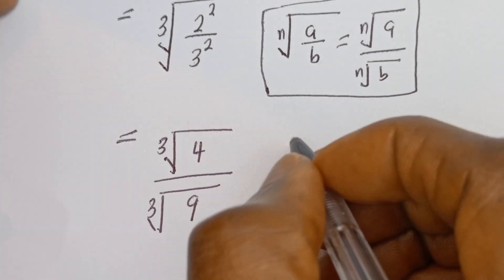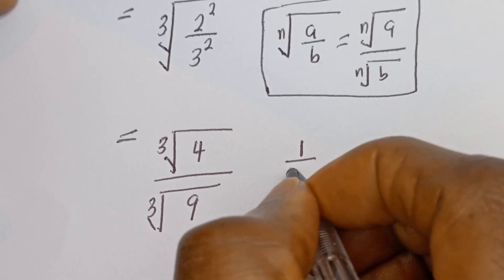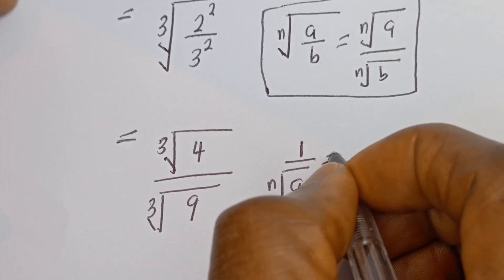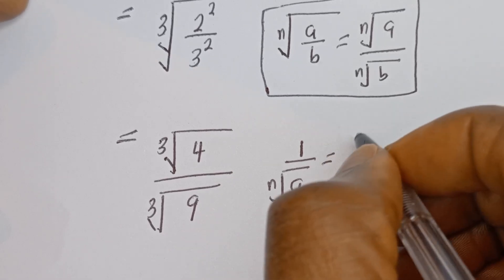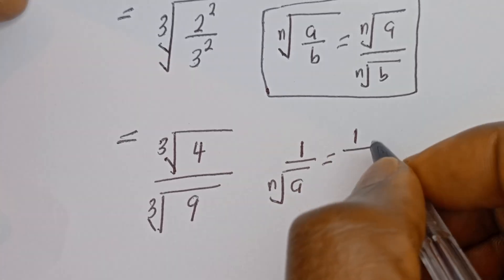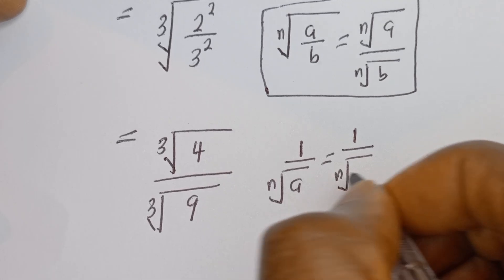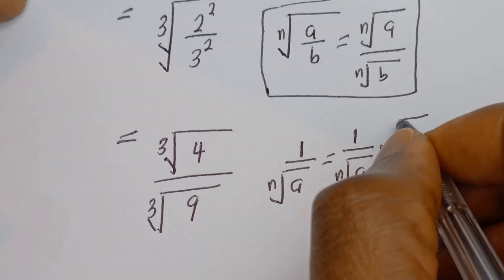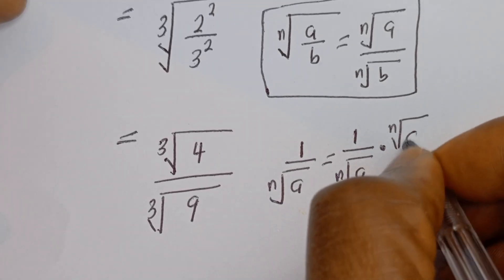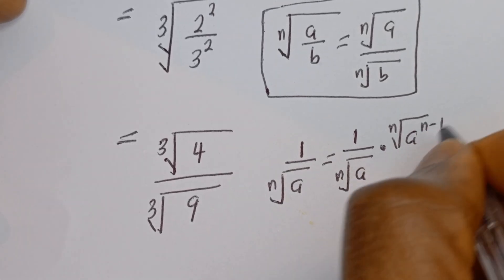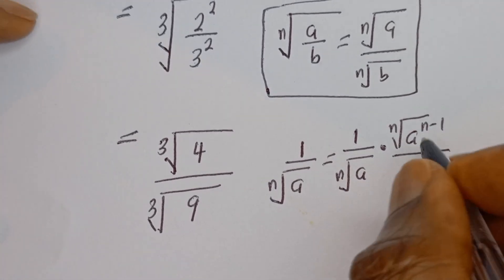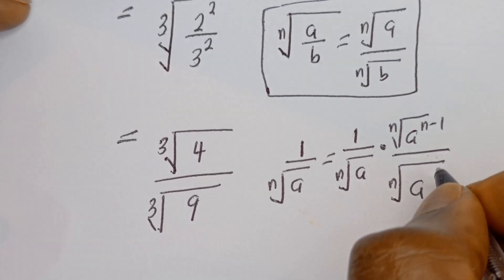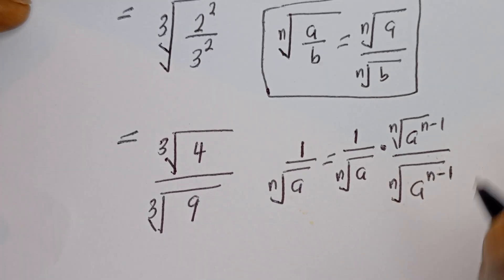Now take note of this: if you have 1 divided by the nth root of a, this is equal to 1 divided by the nth root of a, multiplied by the nth root of a to the power of n minus 1, divided by the nth root of a to the power of n minus 1.